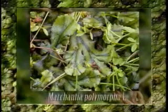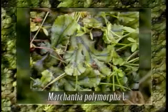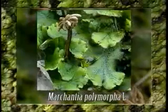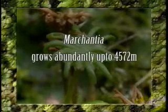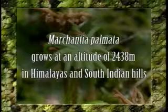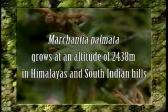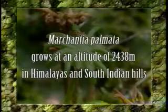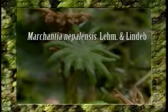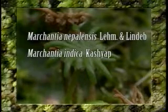In India, Marchantia occurs mostly in the hills on forest floors, shaded cliffs, tree trunks, or the muddy banks of water courses. Marchantia polymorpha is the most common species, reported from Himalayan mountains and South Indian hills, growing abundantly up to 4572 meters. Marchantia palmata grows at an altitude of 2438 meters and is commonly found in Kashmir and Punjab. Other common Indian species include Marchantia nepalensis, Marchantia indica, and Marchantia simulans. Plants bearing sex organs are found in February and March in the Himalayas and October and November in South Indian hills.